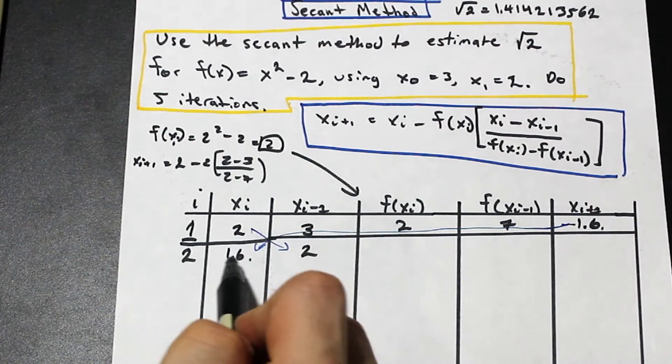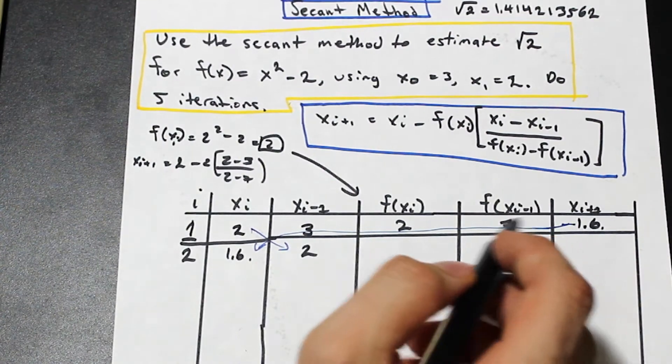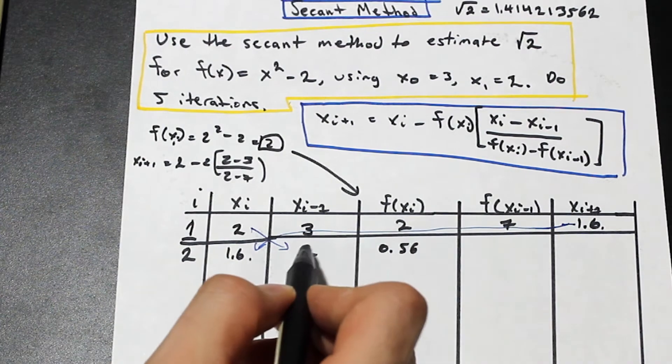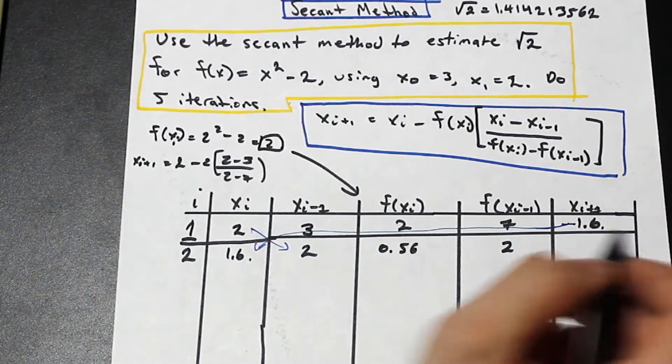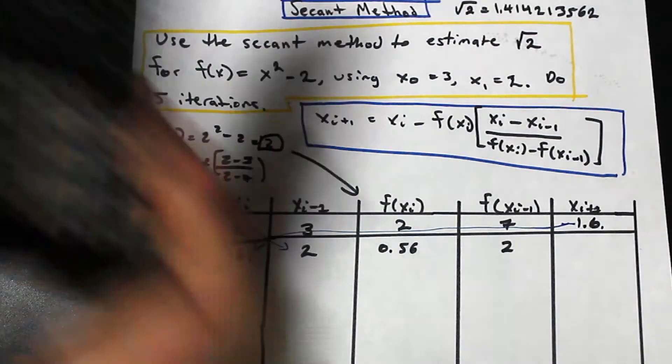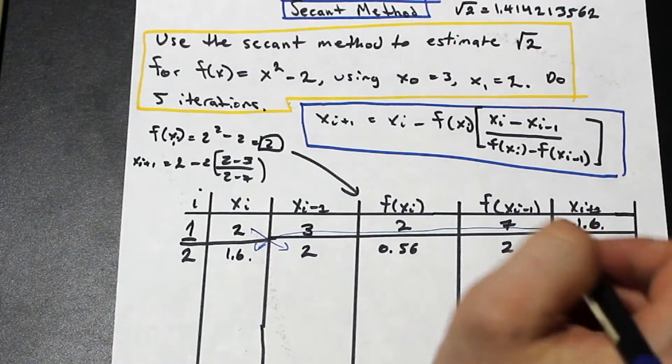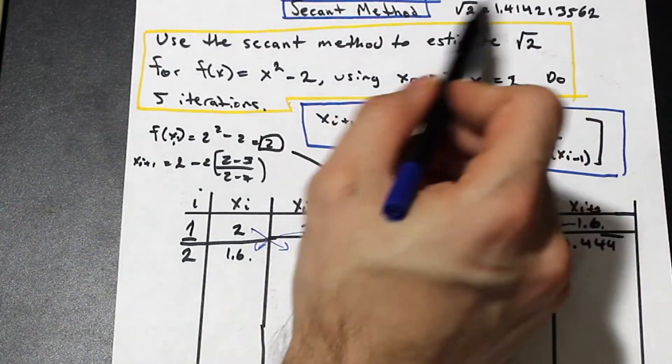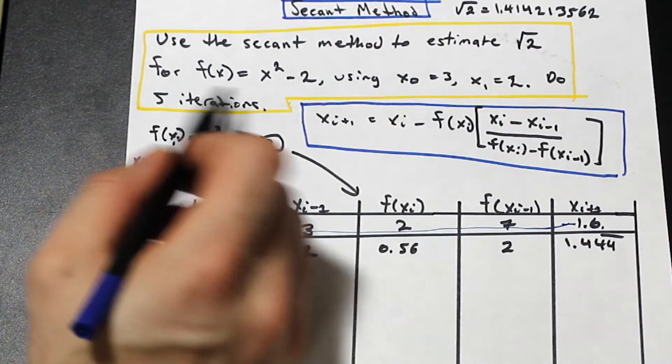And now we just repeat the steps. So really straightforward, plug in 1.6 into f here. So we're going to 1.6² - 2, that's going to give us 0.56. So now since we're looking for xi-1 in this column, we just go back to the previous iteration of f(xi), and we just use that. Plug all these four back into this. If you have a programmable graphing calculator, I suggest programming this formula in and just getting it to do it for you so you don't make any mistakes. So our guess at root 2 for the second iteration is 1.444. So you can see it's getting closer. It's converging on root 2 here, but we still need a few more. It did tell us to do five iterations.